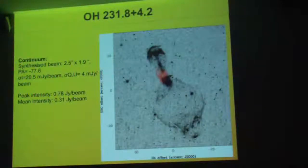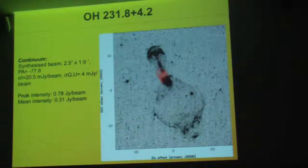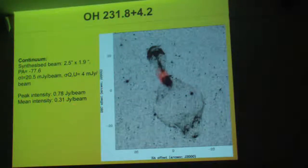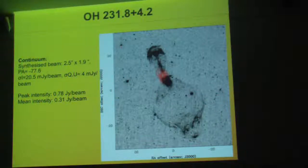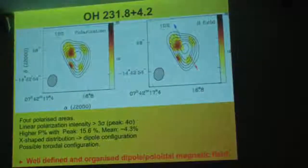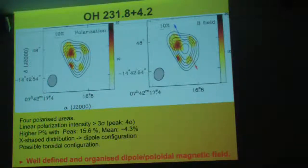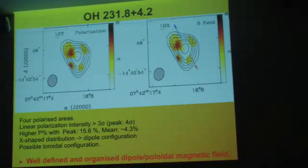In the case of OH 231.8, here is the continuum. We had a peak intensity of 0.76 Jy/beam — much lower than the other object — with a mean intensity of 0.31 Jy/beam. This object was really interesting because what we detected is that you have four polarized areas. Those areas have been detected above 3 sigma, with a peak of 4 sigma.